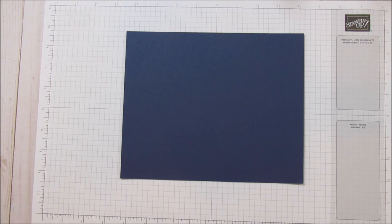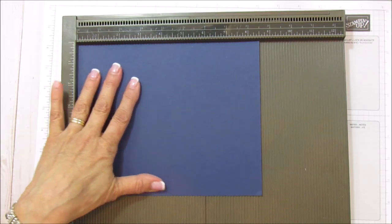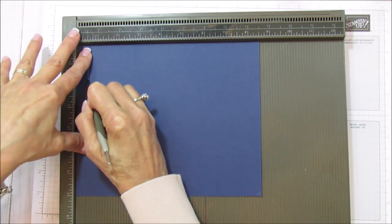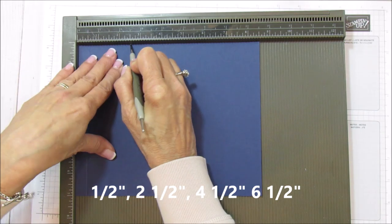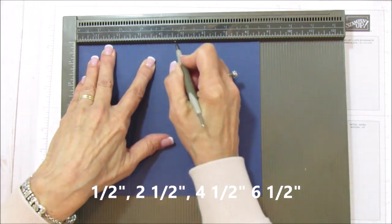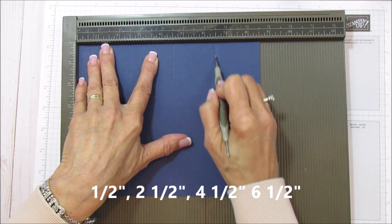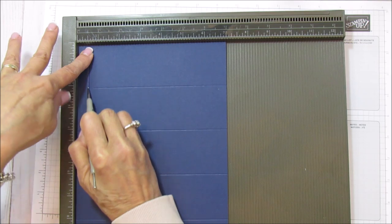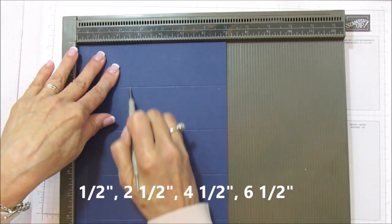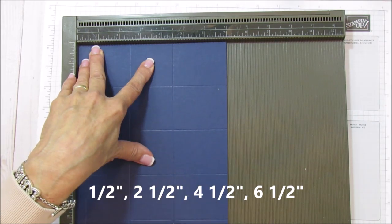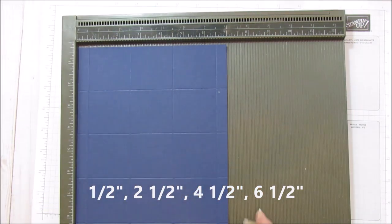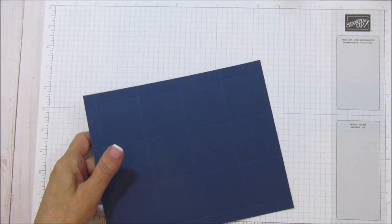Let's score this. It's really rather simple scoring - you just need to pay attention to the cutting. Score at one and a half, two and a half, four and a half, and six and a half. Then you're gonna turn it and score it again at one and a half, two and a half, four and a half, and six and a half. That's it. There are a lot of little squares, but just watch how I cut it and it'll go together really easy.